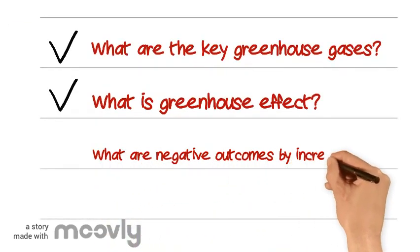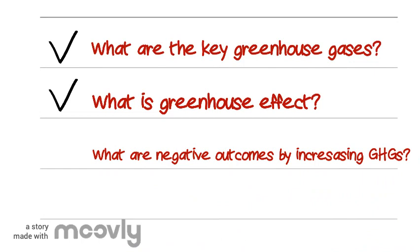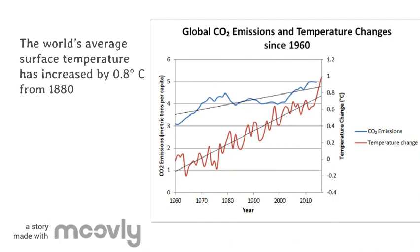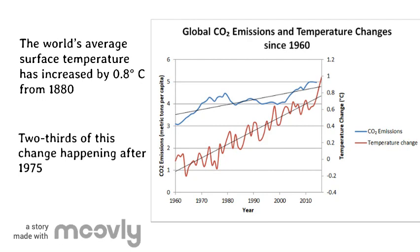Therefore, how seriously have the increasing greenhouse gases affected our planet? According to NASA, the world's average surface temperature has increased by 0.8 degrees Celsius since 1880. You might think it's only 0.8 degrees Celsius and our planet won't be affected badly — however, this 0.8 degrees Celsius has already caused significant negative effects. You can see on the plot the relationship between carbon dioxide emissions and temperature change. With carbon dioxide emissions increasing each year, our planet becomes warmer and warmer, and the combined effect of so many different greenhouse gases will have a huge negative impact on climate change.